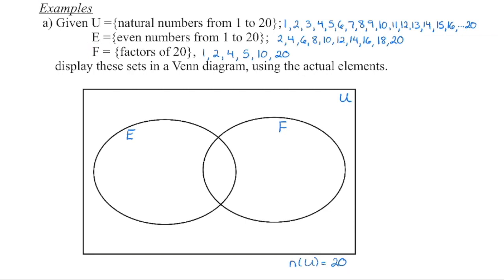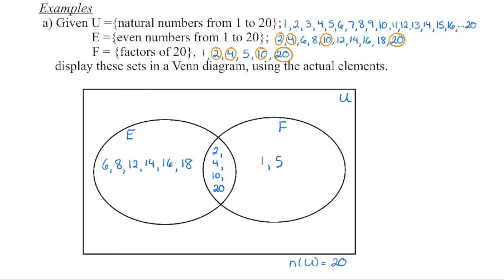The common elements — two, four, ten, twenty — go in the intersection. The remaining elements of E (not circled) go in E only: six, eight, twelve, fourteen, sixteen, eighteen. The F only section contains the odd factors: one and five. We need 20 elements total in the diagram, so we double-check our count.